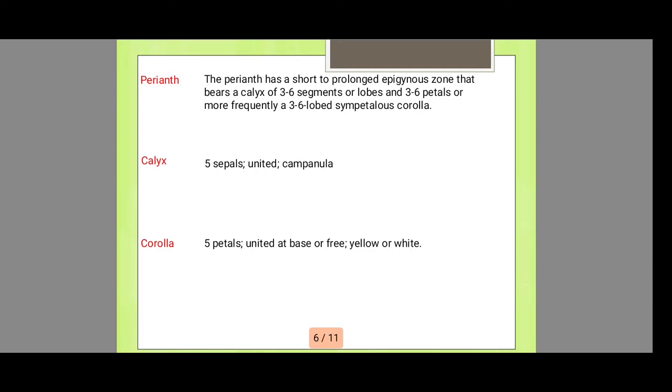Next is the perianth. The perianth has a short or prolonged hypanthium that bears a calyx of three to six segments. This is the perianth and calyx.